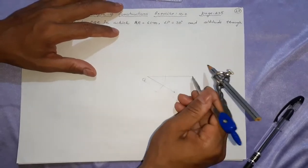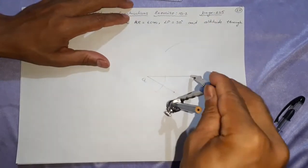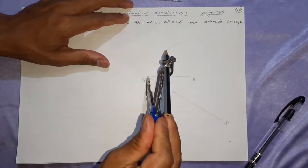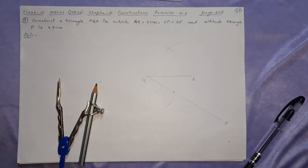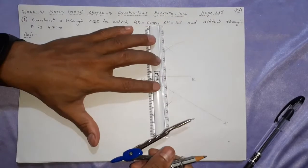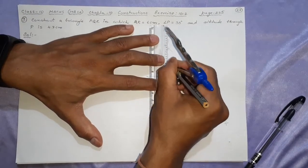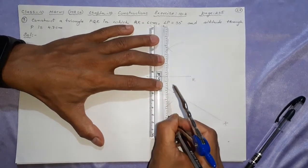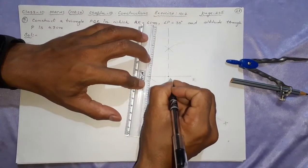Now the next step is to take the perpendicular bisector of QR. Take it slightly more than half, like this — here and here, same arc size, from both ends. Join this too. This is the perpendicular bisector. Here it will be at M.